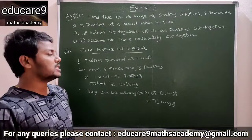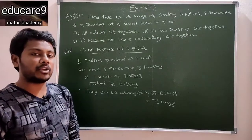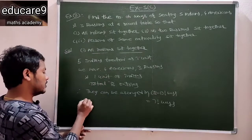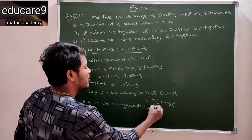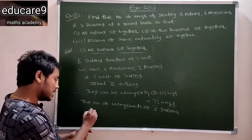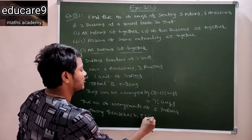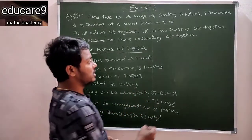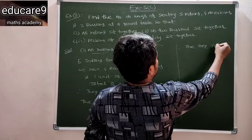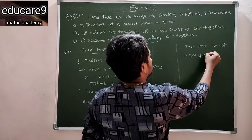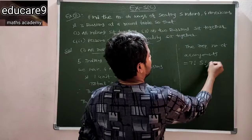Again we have to arrange five Indians among themselves in five factorial ways. So therefore the required number of arrangements is seven factorial into five factorial. This is the answer for the first part.